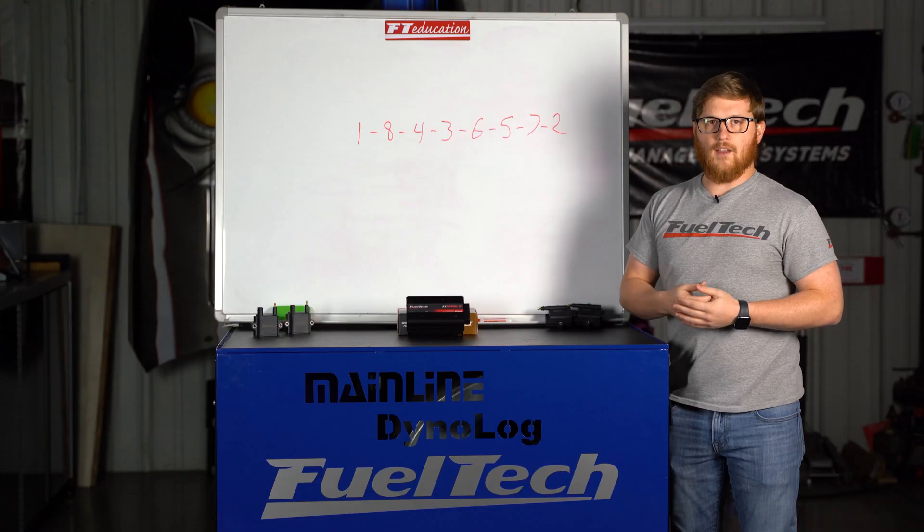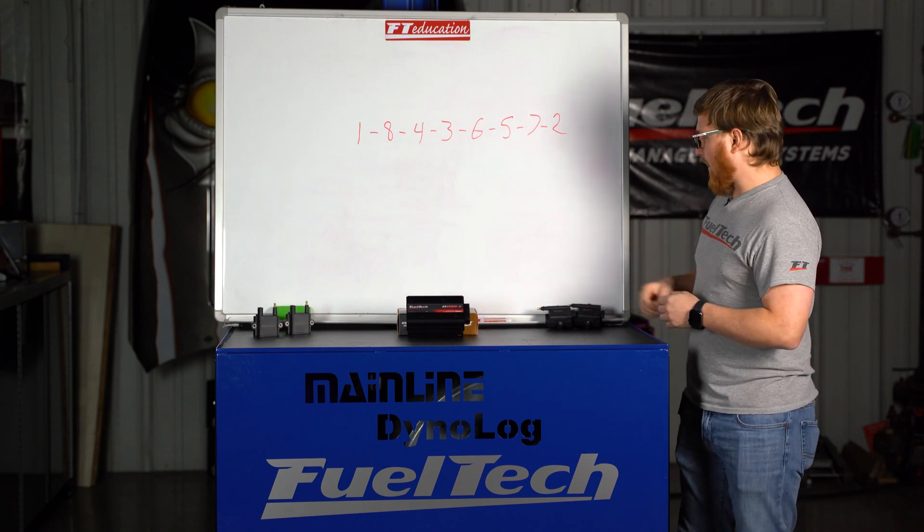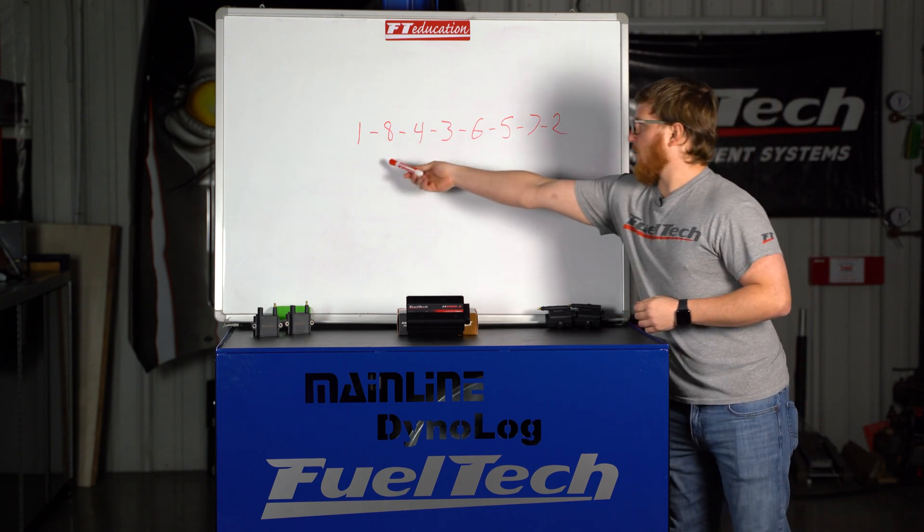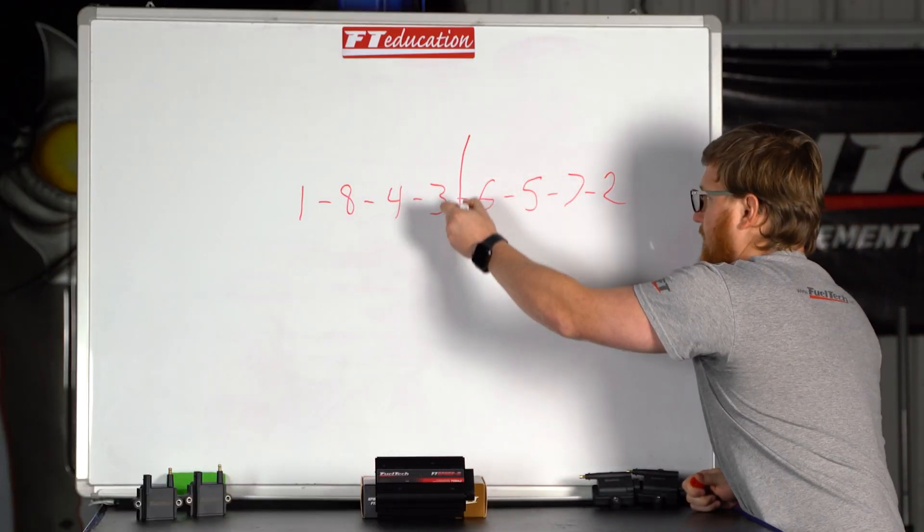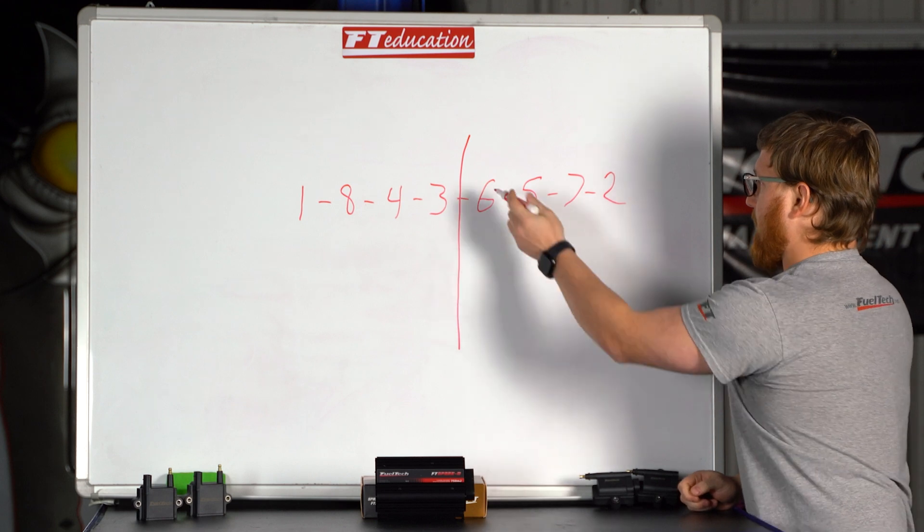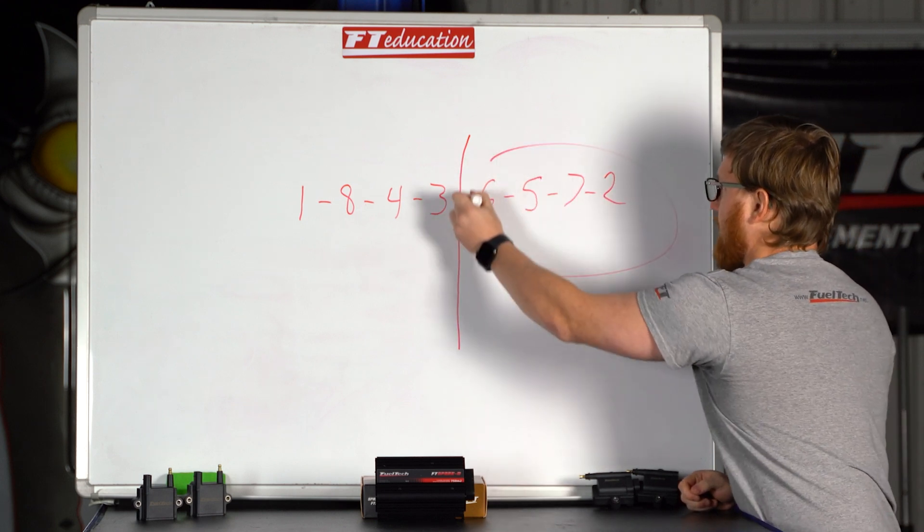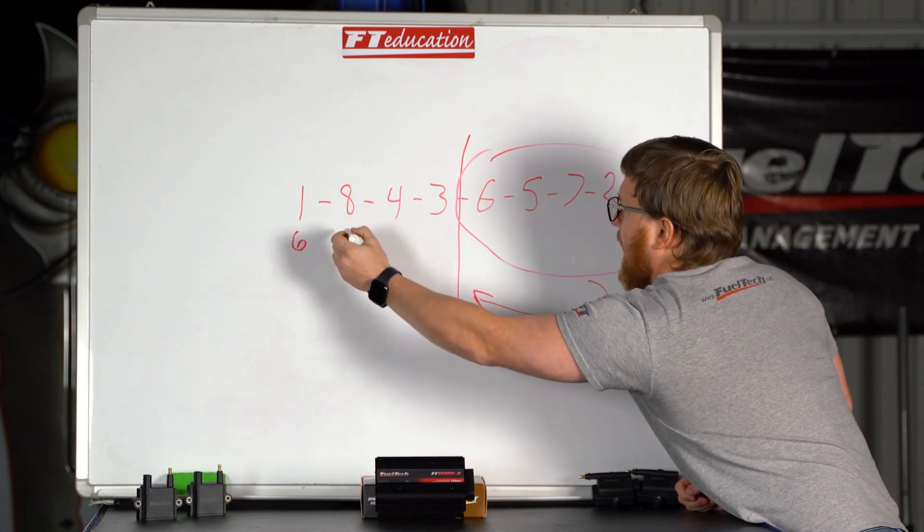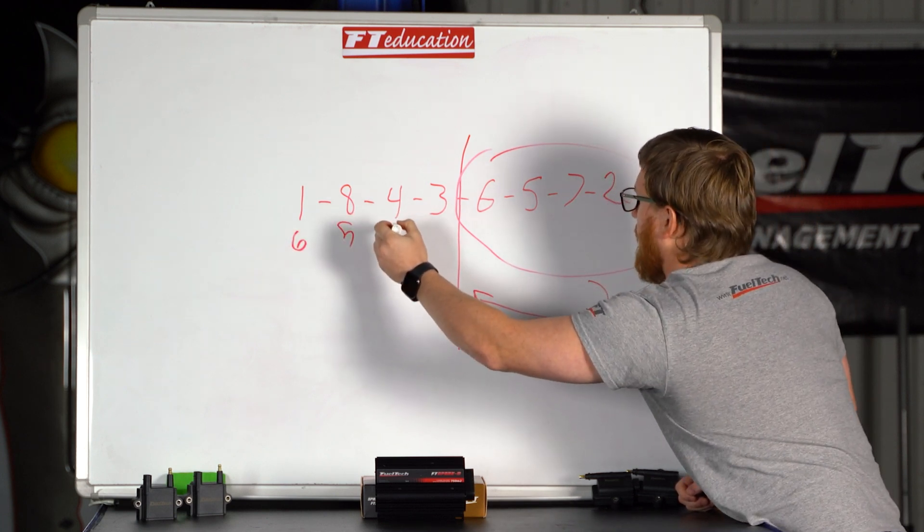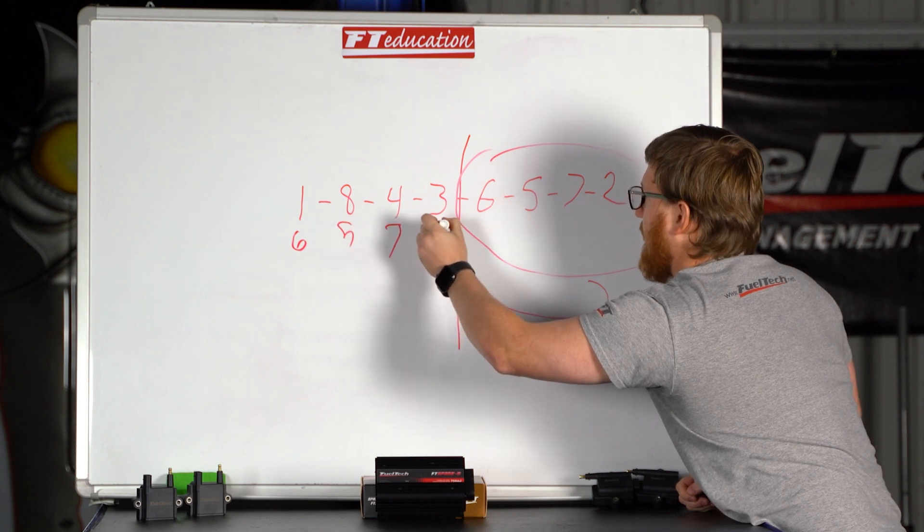It's just there on the exhaust stroke doing basically nothing. And how that works is if you take this firing order that we have here and you draw a line down the center of it and take this section and move it over to here, you would have one and six, eight and five, four and seven, three and two. These are your pairs.